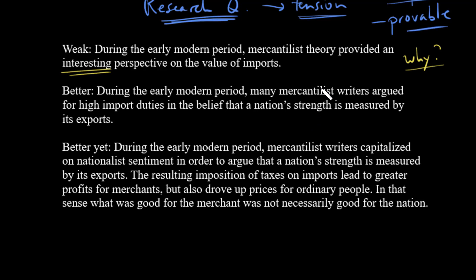We need to spell out what is interesting about this. The better version reads: 'During the early modern period, many mercantilist writers argued for high import duties in the belief that a nation's strength is measured by its exports.' This is fairly specific and focuses on import duties and the idea of the nation. But it's still not great because it's really stating a fact — you can read up on this and probably it doesn't take too much to prove it. We can find one or two mercantilist authors who make this kind of claim and then we're done.